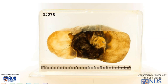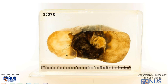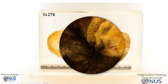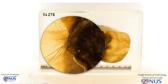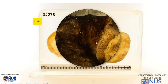Now looking at the cut surface, we can see that there are several compartments or locules to this cystically enlarged ovary, and so we can call this a multilocular cystic ovary. Some of the locules appear to be empty, but in this central one we can actually see that there are some hairs arising from the wall of this locule or from the lining.